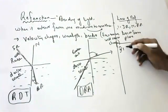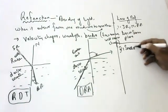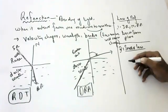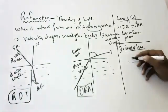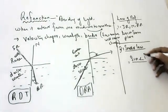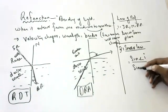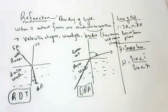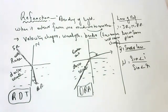Second one is very important — it is the famous Snell's law. Snell's law states that the ratio of the sine of the angle of incidence to the sine of the angle of refraction is constant, and that constant is called the refractive index of the medium.